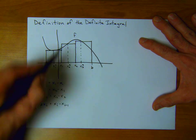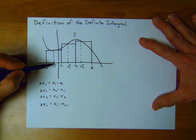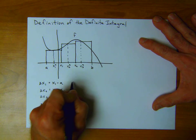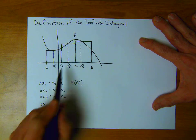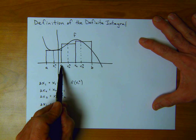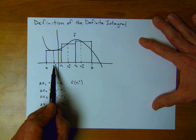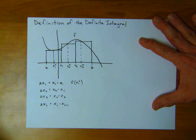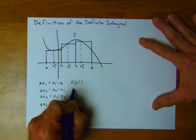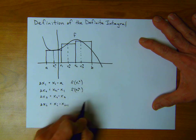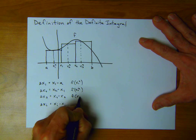What about the heights? Well, if this is f, then what we're taking is the height — the function value associated with x1 star. So the height would be f(x1 star). The reason I'm using star notation is that the ones without stars are the x-values at the endpoints of our rectangles, and the stars are just some point inside the rectangle we're using to get the height. So this one is f(x1 star), this one is f(x2 star), and the third one is f(x3 star).